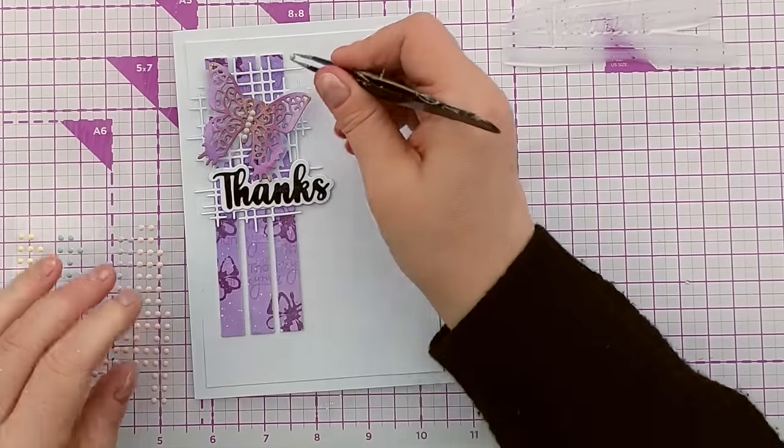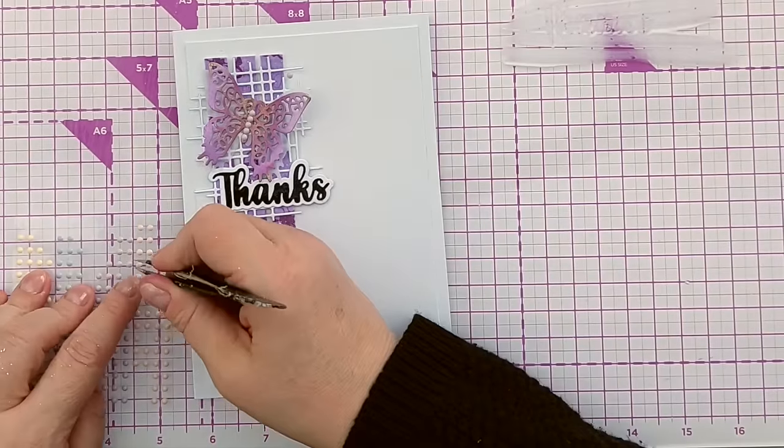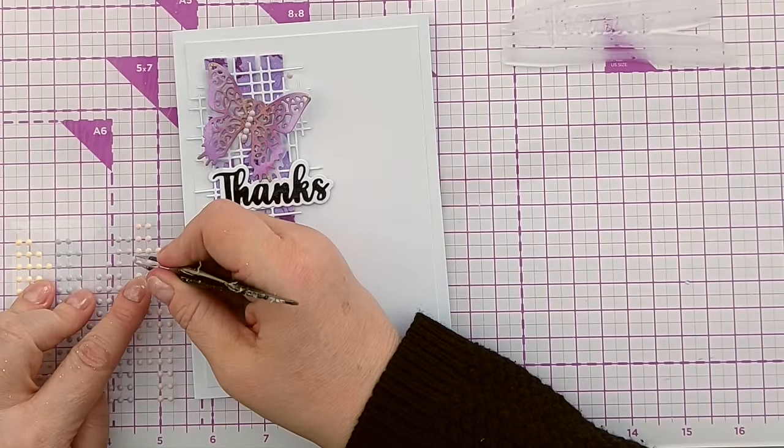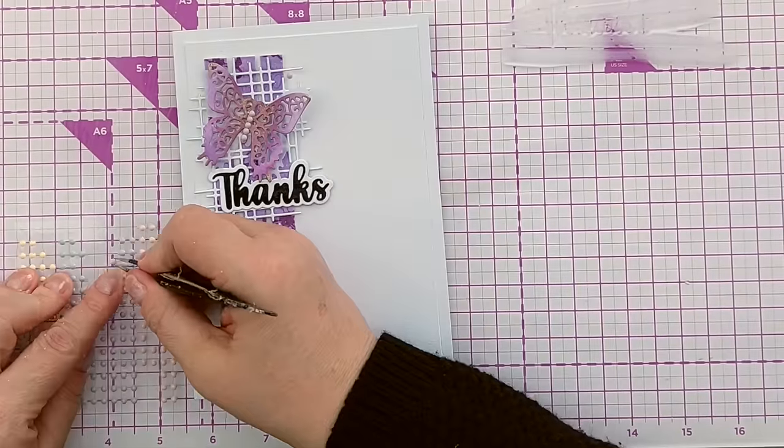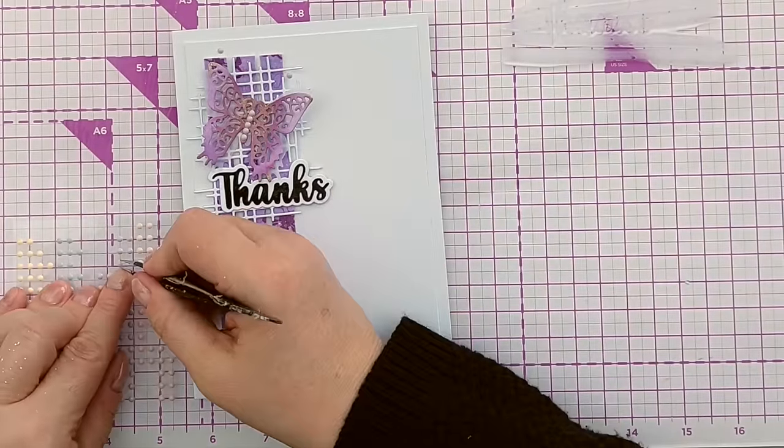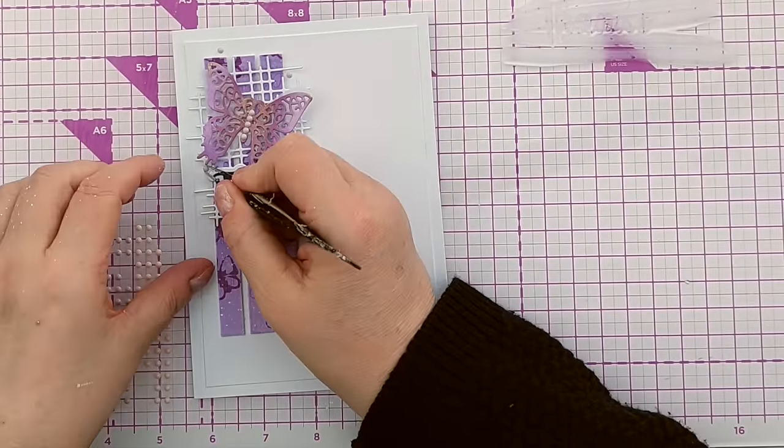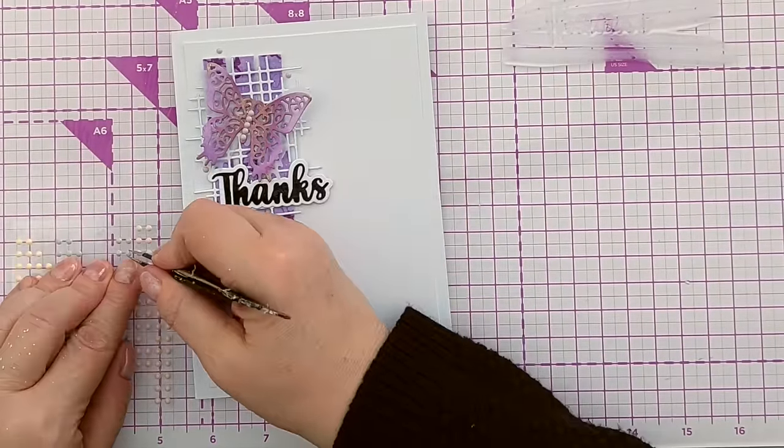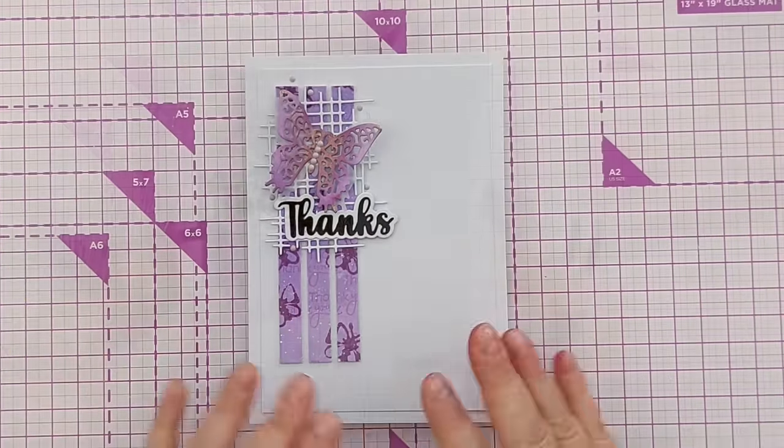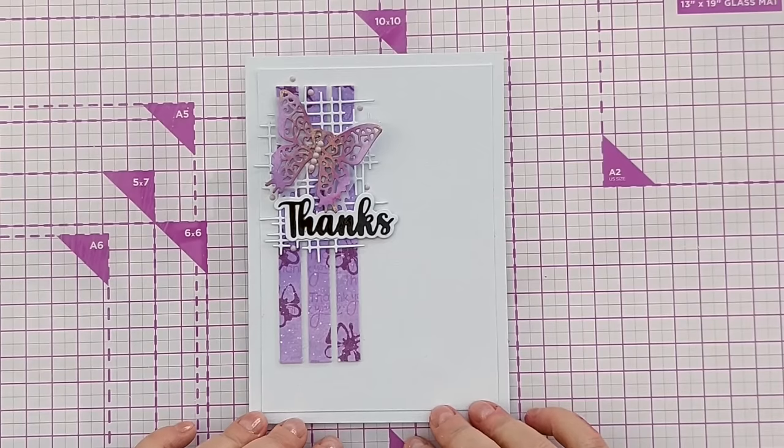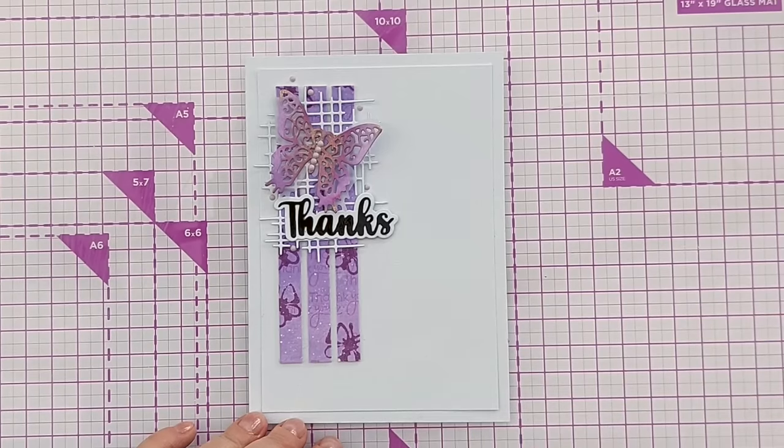And I'm going to add a few just dotted around the focal point for interest, for variation, for dimension, for a bit more shine. So there you have it. Today's card all done and dusted. Now for a couple of extra tips as promised.